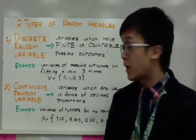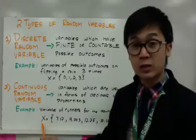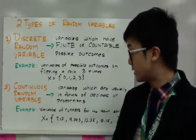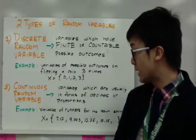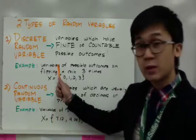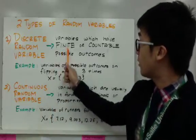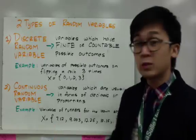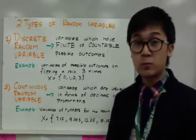Since it's continuous random variables, we'll have x, which is our continuous random variables for this experiment, could be 7.12 seconds, 9.003 seconds, 12.25 seconds, and so on. So that's the difference between the two random variables. One will give you a finite or countable possible outcomes, and the other one will return decimals or proportions based on the experiment you're working on.